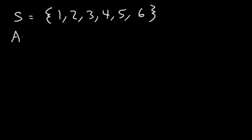Now let's say that event A includes the outcomes, all natural numbers less than or equal to four. And event B has the outcomes three, four, and five.